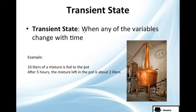The transient state is essentially when any of the variables changes with time. So, there is actual change. Now, I brought here an example. Let's see, we have a pot.